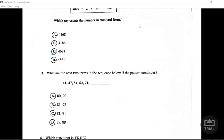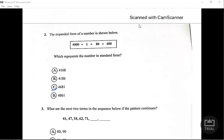Let's look at this one. It says the expanded form of a number is shown below, so we have 4681. All we have to do is just add this and we get our answer, which turns out to be 4681.